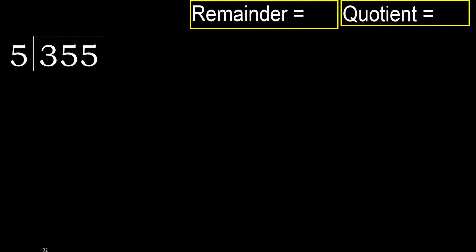355 divided by 5. 3 is less, therefore next. 35 is not less, therefore we work with 35.